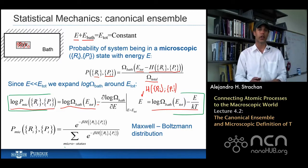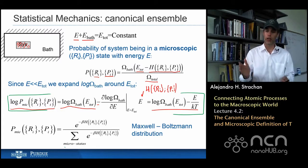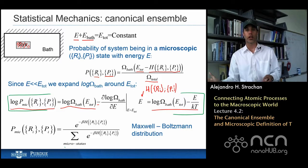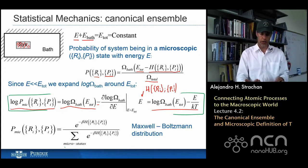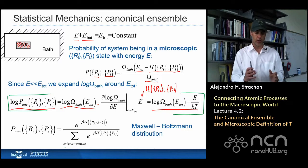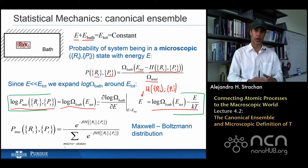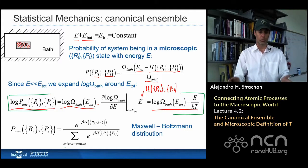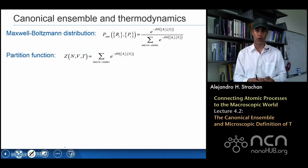What you see in the denominator is simply a normalization function. Since this is a probability, summing over all possible states must give 1 — the denominator guarantees that. So we have derived the Maxwell-Boltzmann distribution. This denominator, the normalization function, is very useful and has a name: it's called the partition function, typically written as Z.